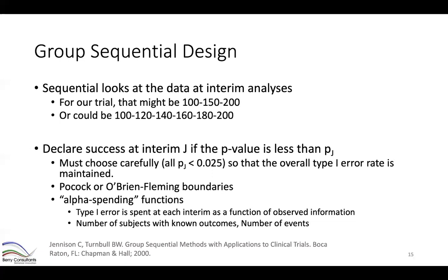Two of the most common methods for adjusting thresholds are Pocock and O'Brien-Fleming boundaries. Pocock uses the same threshold for all interims. O'Brien-Fleming uses different thresholds — more conservative early on, requiring a much more stringent p-value to win at an earlier interim, with the threshold relaxing as the trial moves to later sample sizes. There are also alpha spending functions that spend the type one error at each interim according to how much information is available, measured by subjects with known outcomes or, for time-to-event trials, by number of events observed.